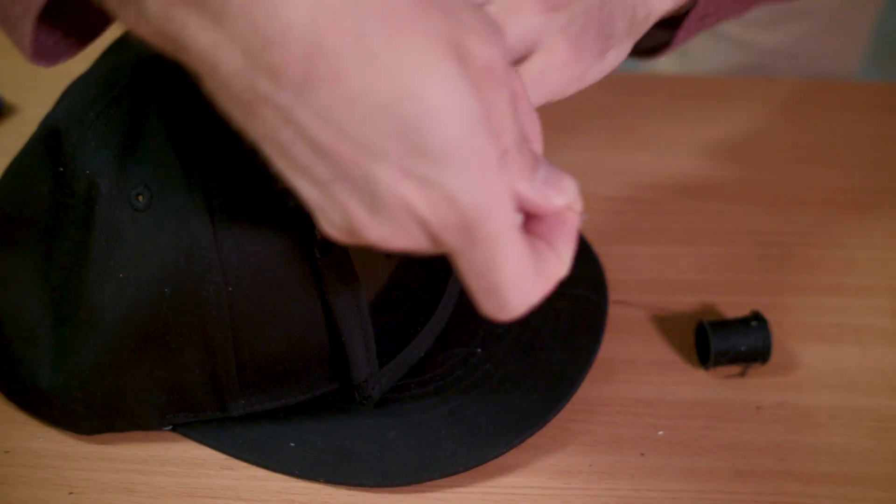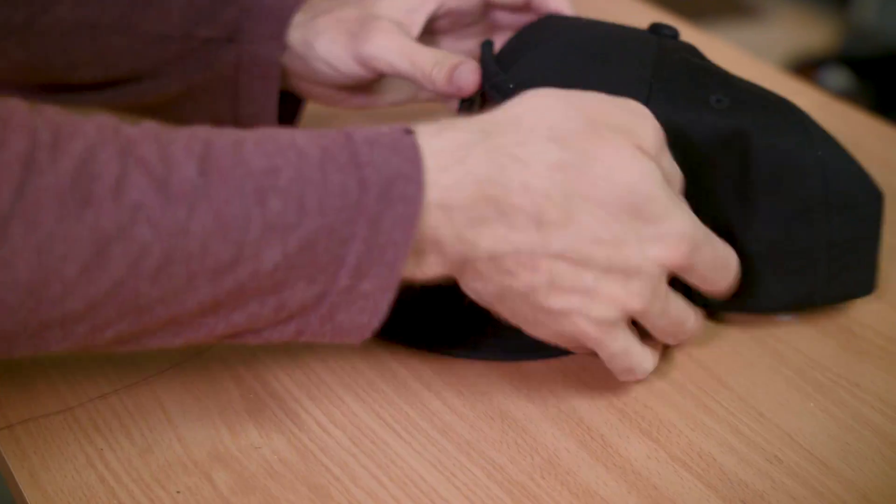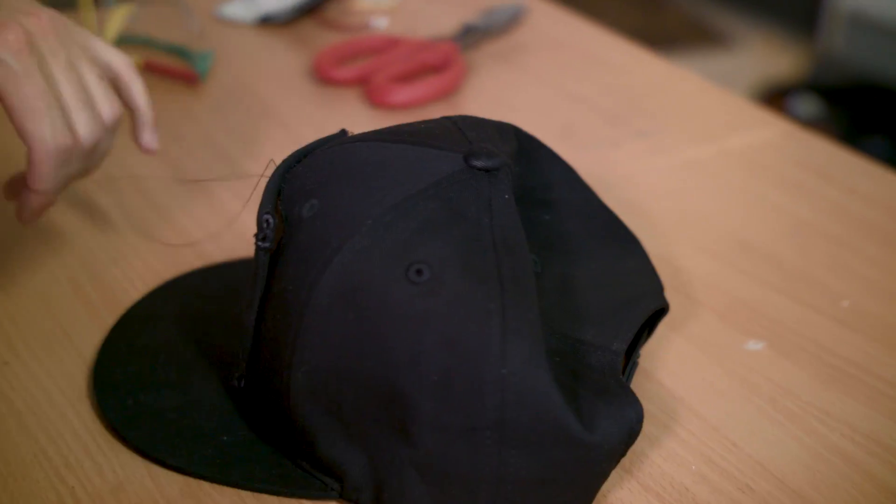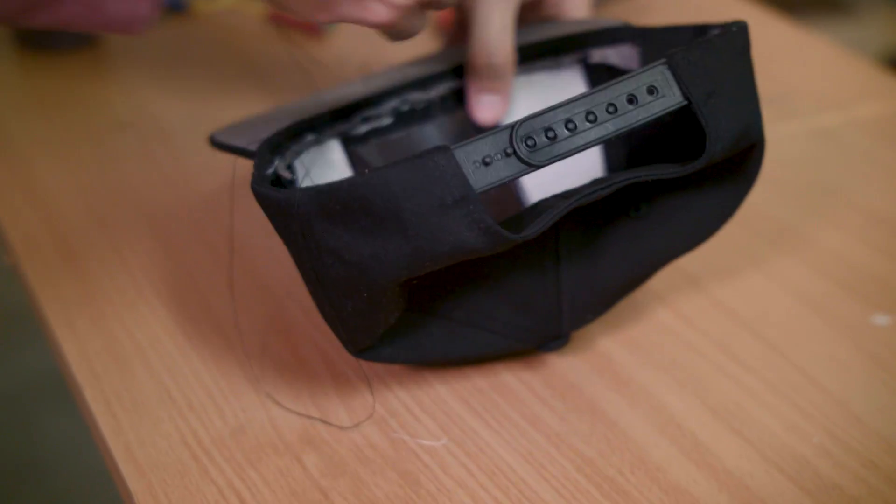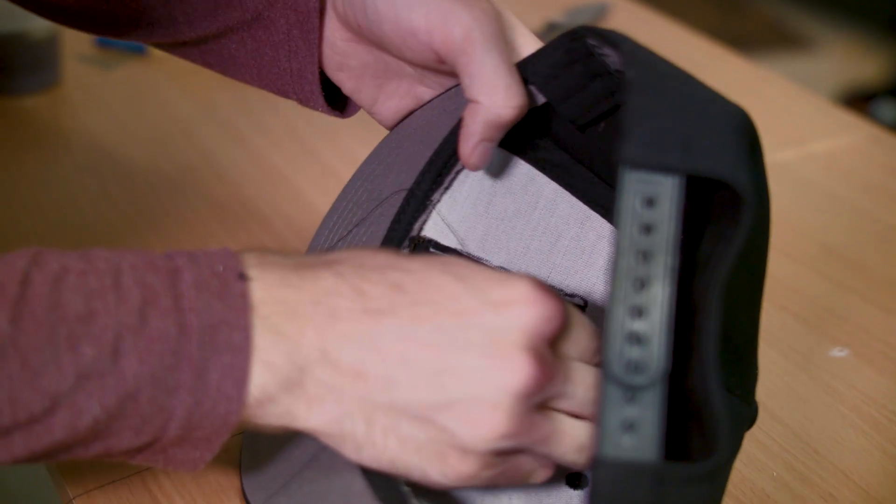To attach the visor to the hat, we sewed through the excess material on the border using the same running stitch pattern. It was easiest to sew this in two halves, both starting from the top and ending at the bottom, one for the left side and one for the right.